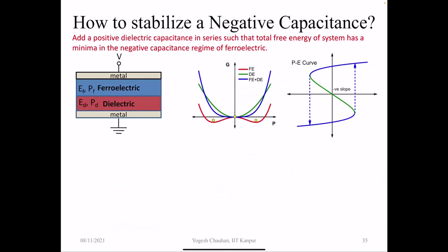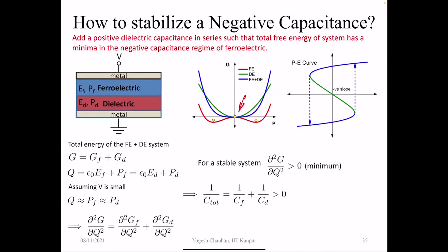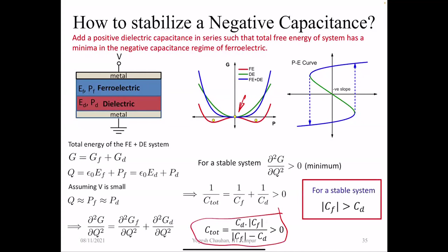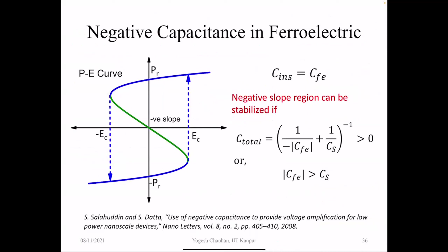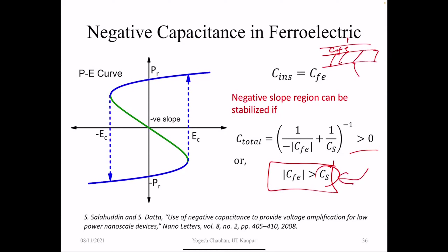To stabilize the negative capacitance, as shown in a paper from Asif Khan, we can add a positive dielectric capacitance in series with the ferroelectric, so the total free energy of the system has a minima in the negative capacitance region. The condition is that C_total must be positive, which means the modulus of the ferroelectric capacitance must be greater than the dielectric capacitance added in series — for example, the semiconductor capacitance. The CFE must be greater than the semiconductor capacitance.